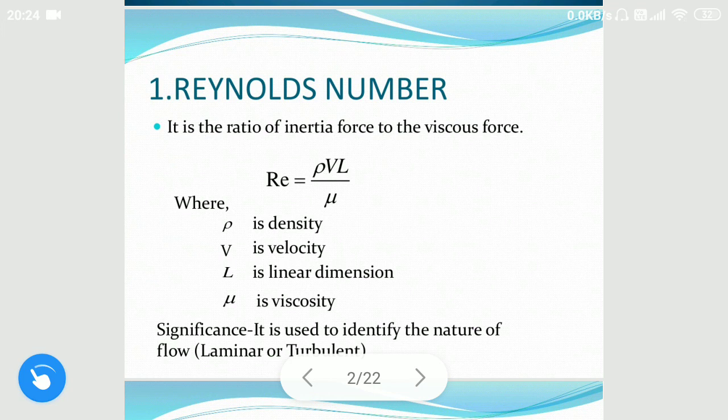Reynolds number is generally used to identify whether the inertial force is bigger or lesser than the viscous force, and it helps us in identifying the nature of the flow — whether it is laminar or turbulent.